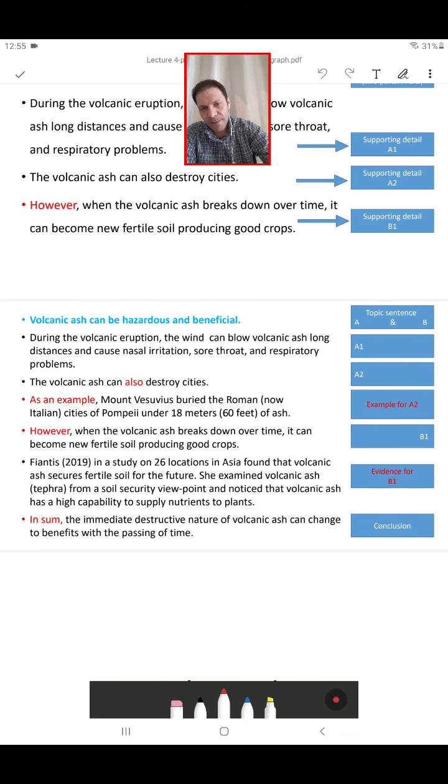Volcanic ash can cause nasal irritation, this is A1. And volcanic ash can destroy cities, A2. But I can have one example for this. As an example, then there was volcanic ash experience which destroyed the whole city.